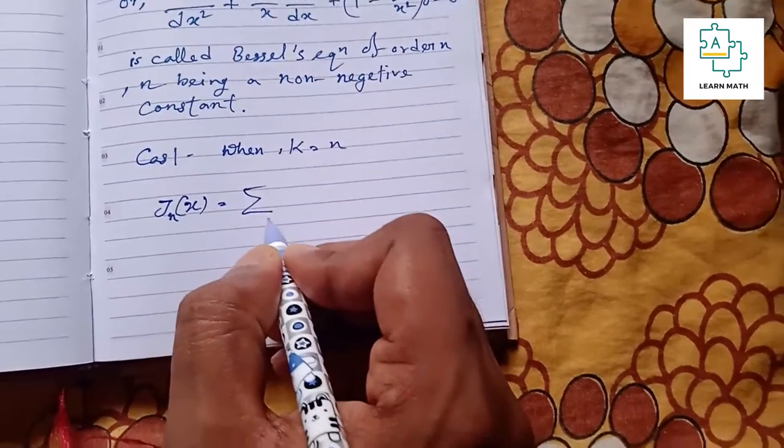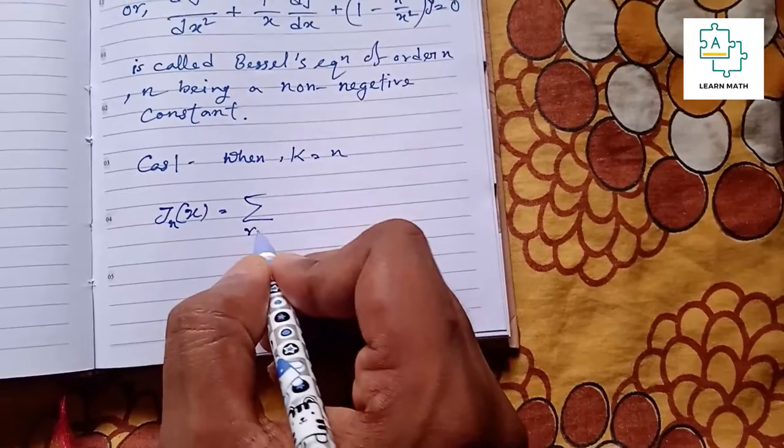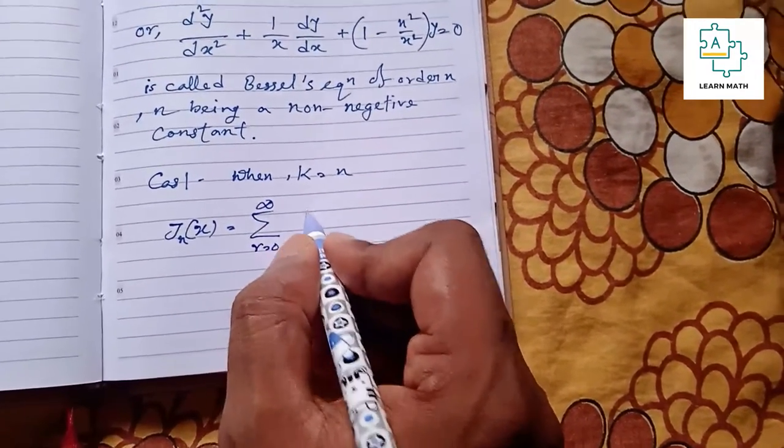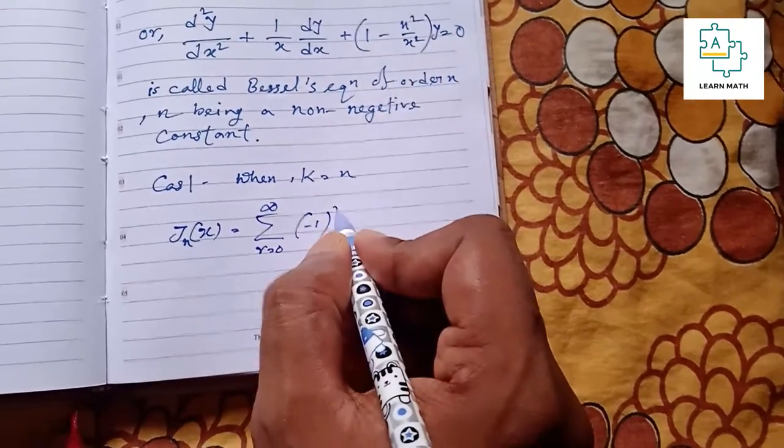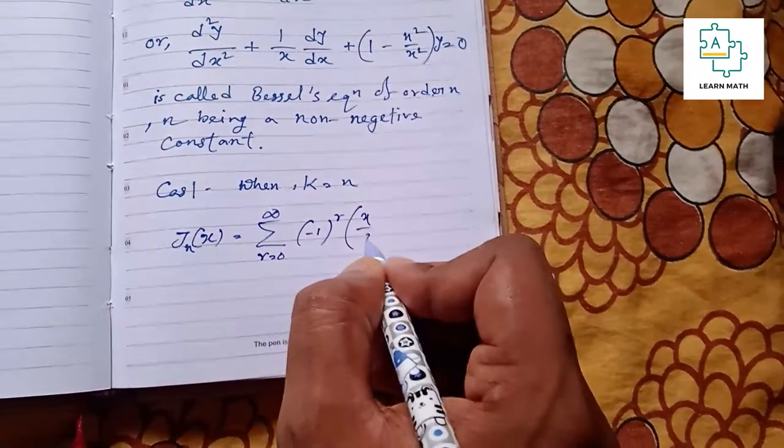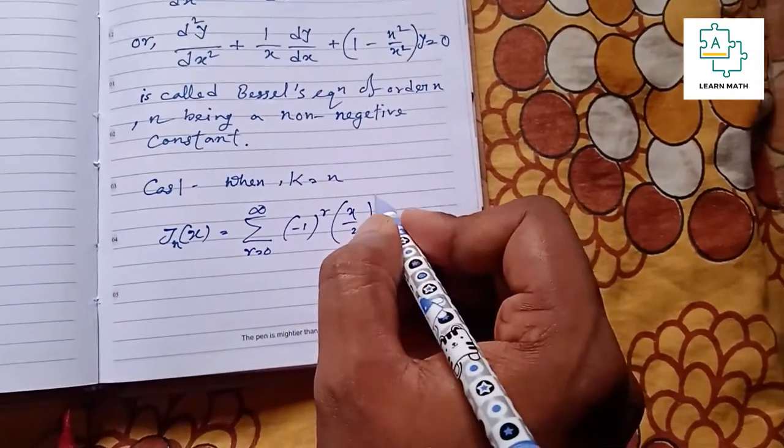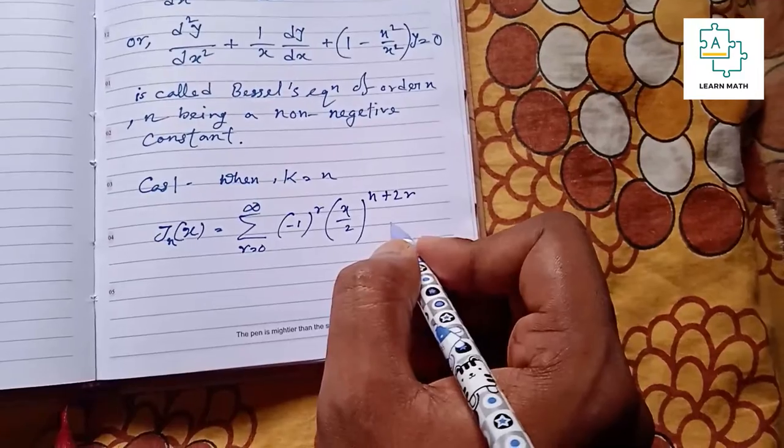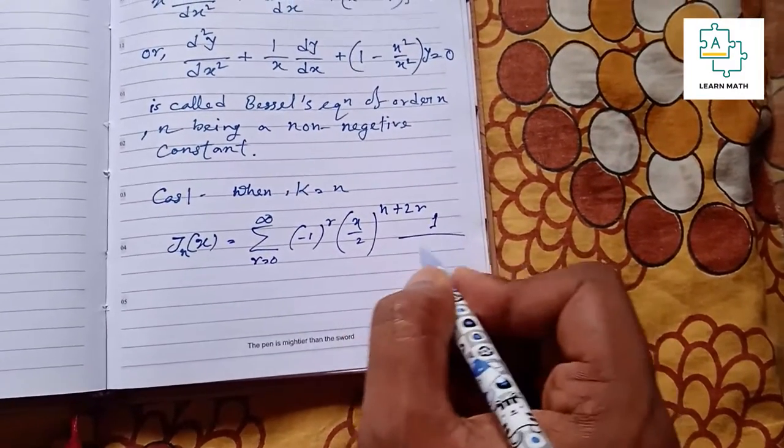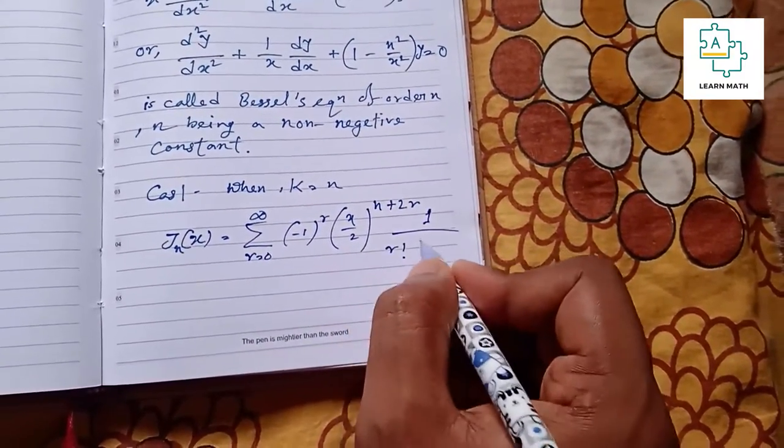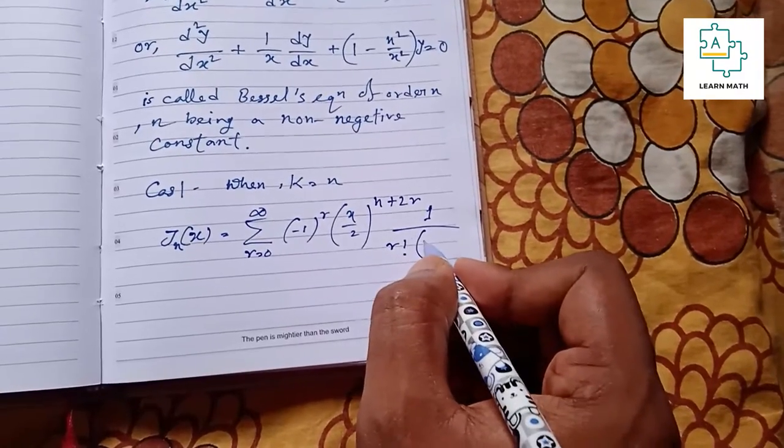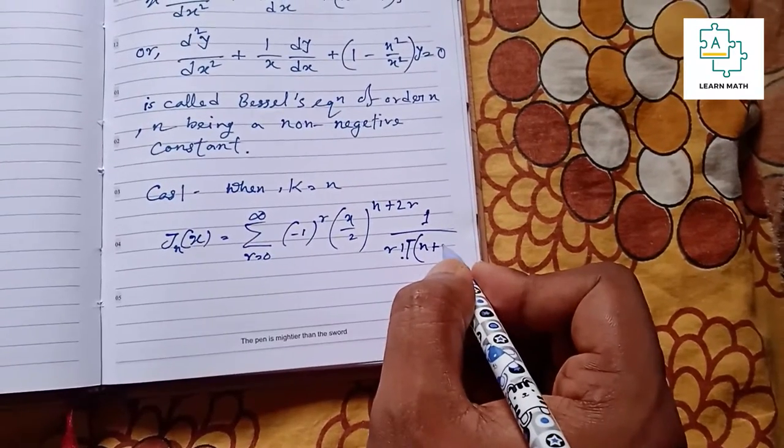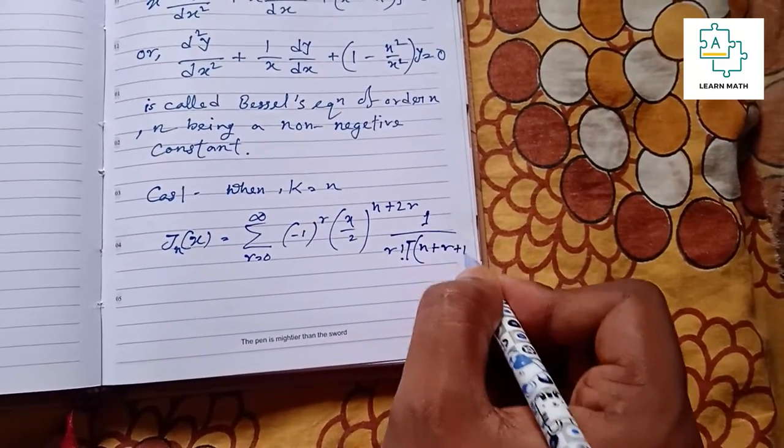J_n(x) equals summation r equals 0 to infinity: (-1)^r times (x/2)^(n+2r) divided by r factorial times (n+r+1) factorial.